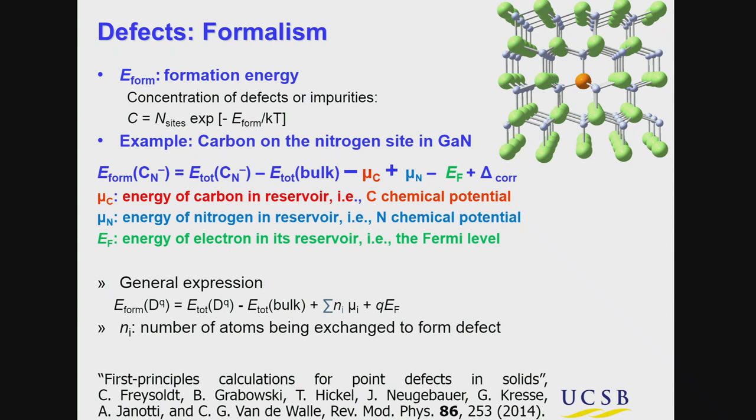So, we use our formalism that we developed some time ago and this is actually a review article that can kind of serve as a manual for how to do these first principles calculations for point defects in solids. We calculate the formation energy of the defect. I won't say much about that, but that obviously gives you information about how likely it is that a certain defect can actually be formed in the solid in case you are looking to design new types of single spin centers.